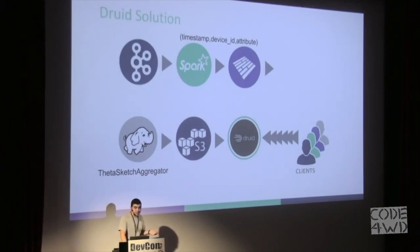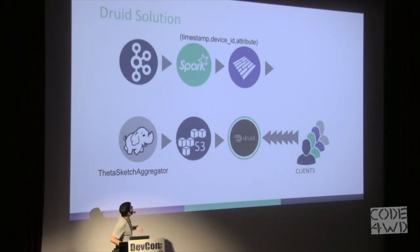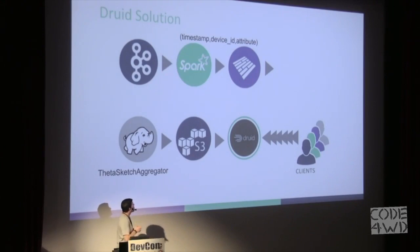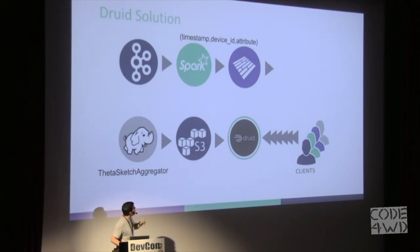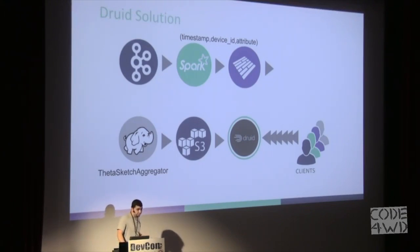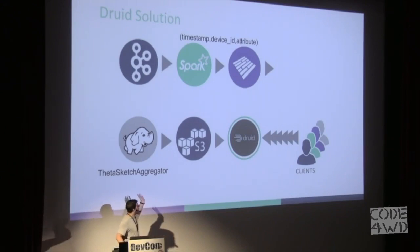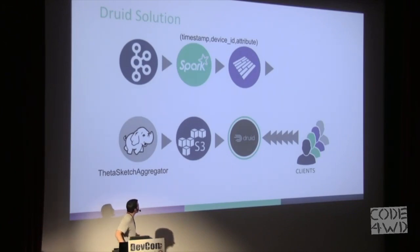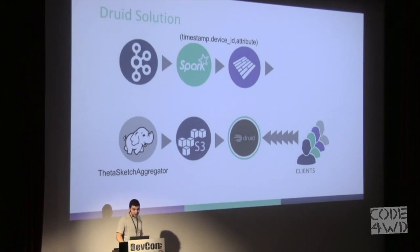Then we heard about DataSketches and Druid and decided to benchmark it. We built the following pipeline: everything starts with a Kafka cluster that aggregates all the events from our data centers. Then a Spark job reads the events from Kafka and transforms them into tuples of timestamp, device ID, and attribute, storing them on S3 in Parquet format. Then a Druid MapReduce job with ThetaSketch aggregators runs on these Parquet files and stores everything in deep storage — in our case S3. Druid then takes the data from S3 and serves the client's queries.